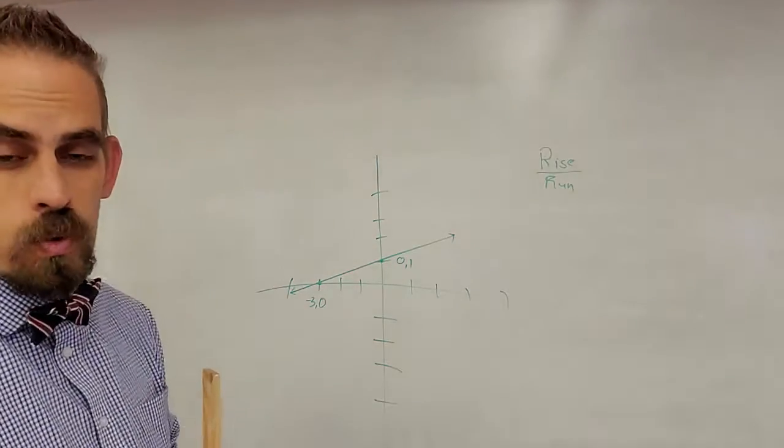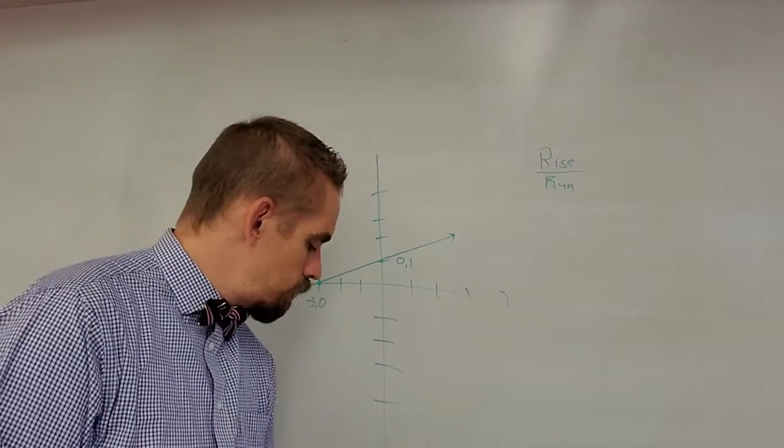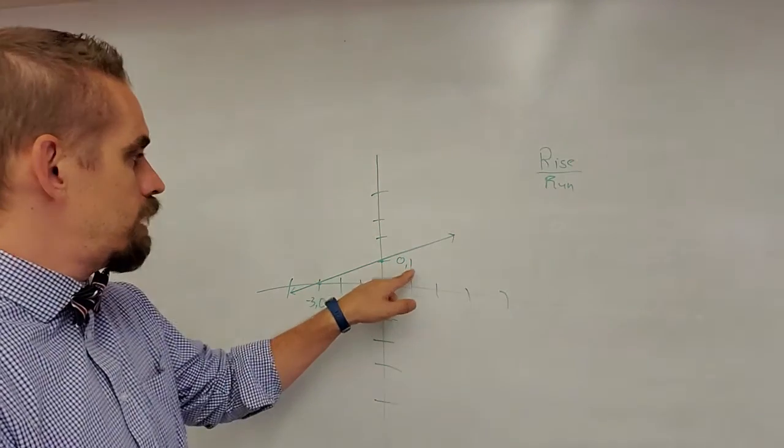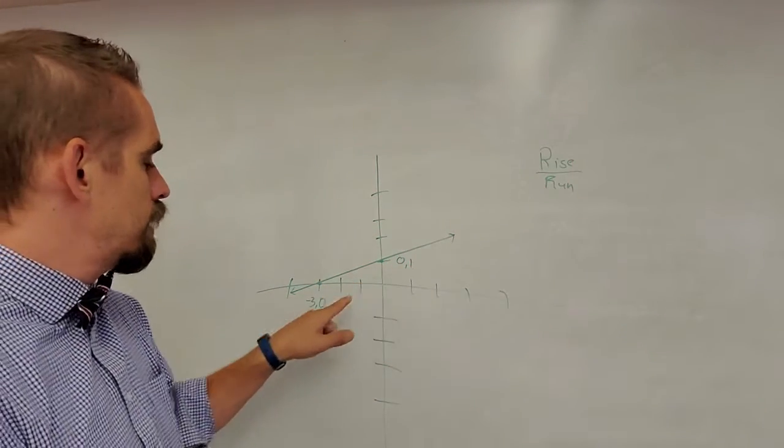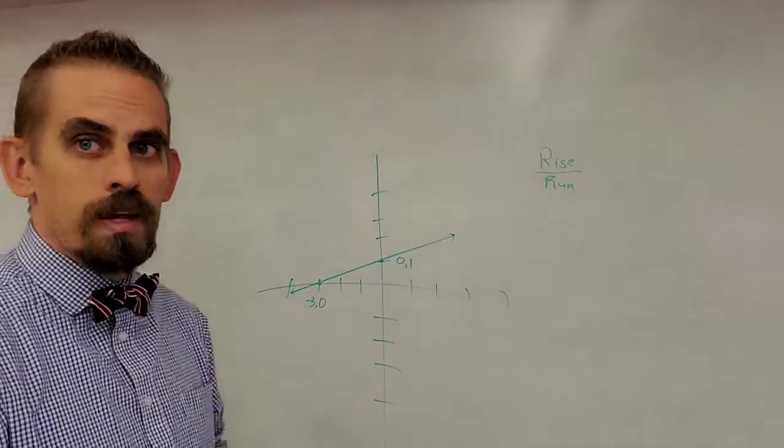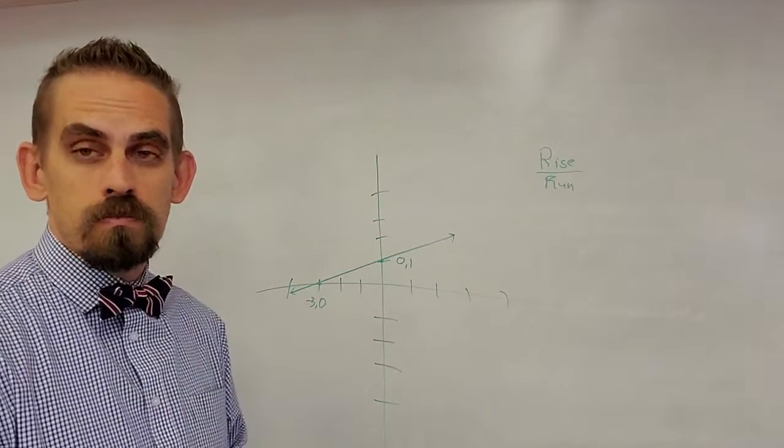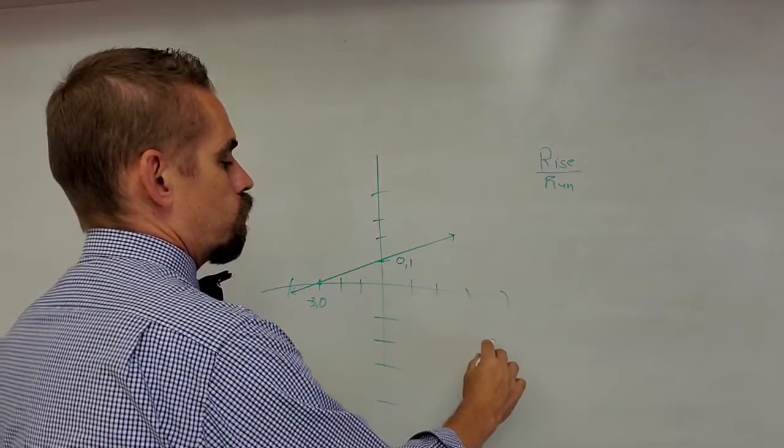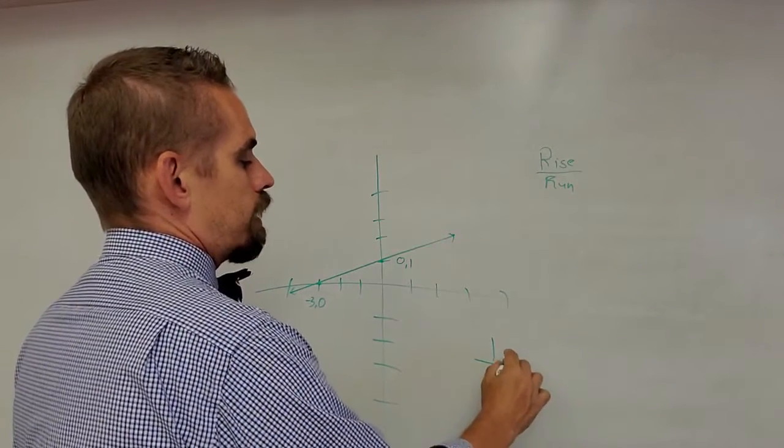If you want to know what your rise is, take your y values. So my y value here is one, and my y value here is zero, and you subtract them. What's one minus zero? It's one. So for the slope here, it would be one, that's my rise.